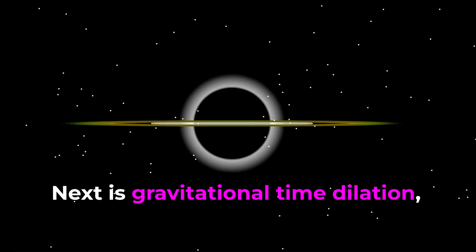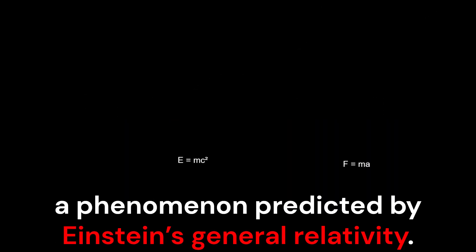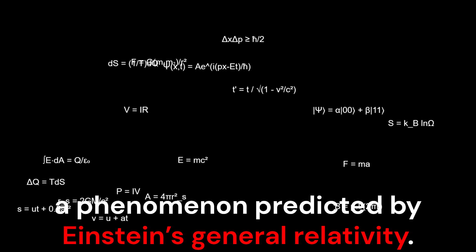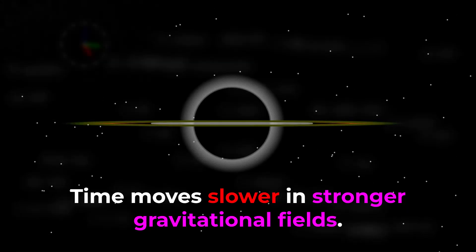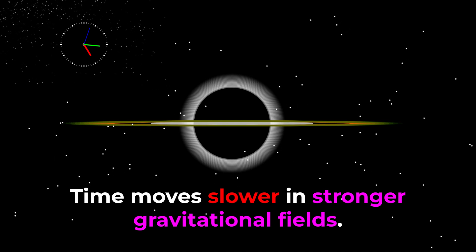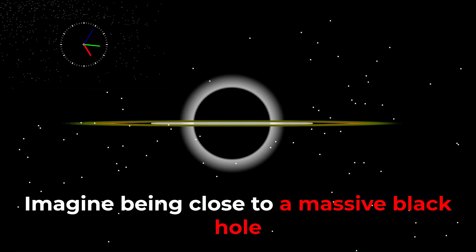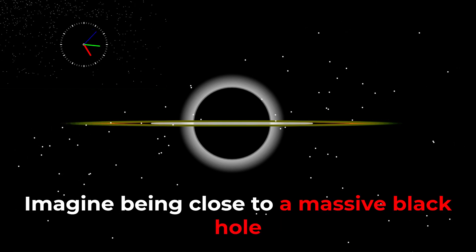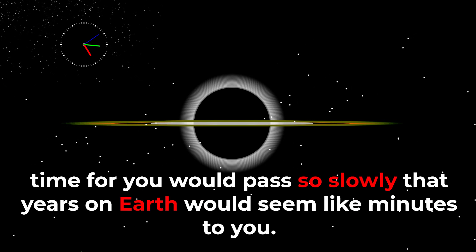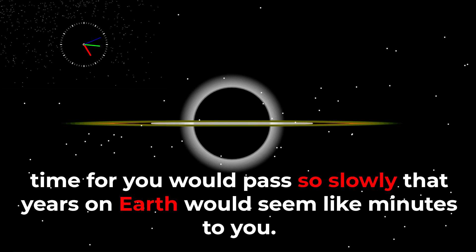Next is gravitational time dilation, a phenomenon predicted by Einstein's general relativity. Time moves slower in stronger gravitational fields. Imagine being close to a massive black hole. Time for you would pass so slowly that years on Earth would seem like minutes to you.